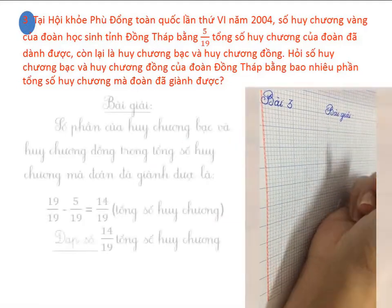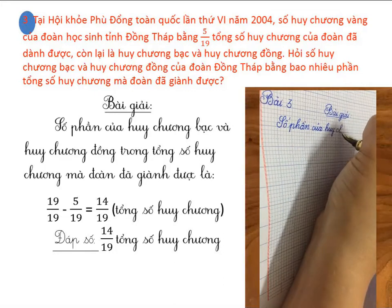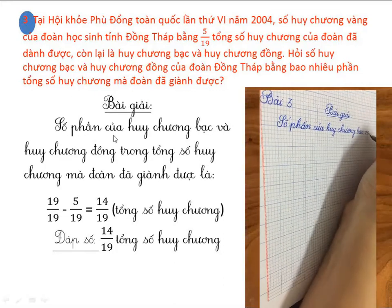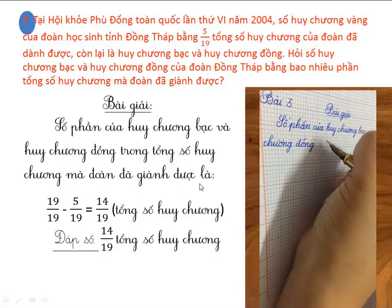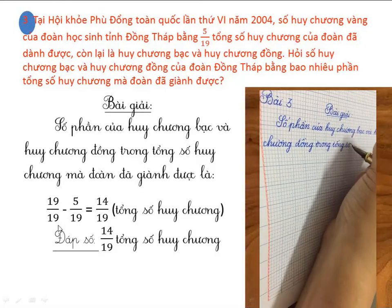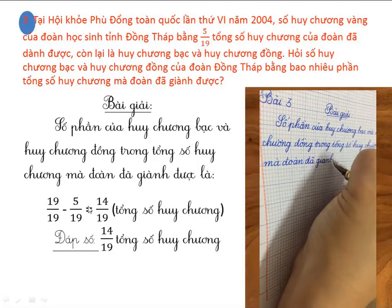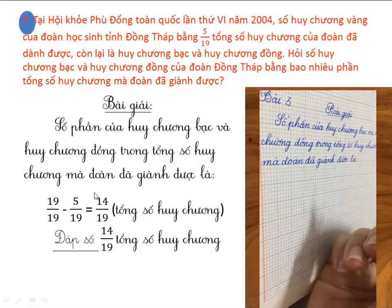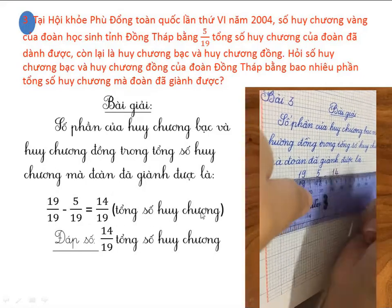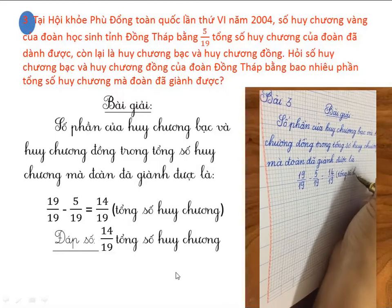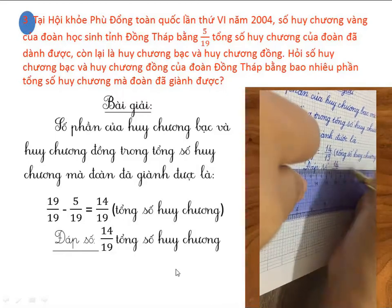Sau đây, các em hãy đối chiếu đáp án của cô với đáp án của các em. Số phần của huy chương bạc và huy chương đồng trong tổng số huy chương mà đoàn đã giành được là: chúng ta lấy số phần tổng số huy chương là 19 phần 19 trừ đi 5 phần 19 bằng 14 phần 19 tổng số huy chương. Đối với dạng bài tập này, thì các em chú ý đơn vị của bài toán nhé!